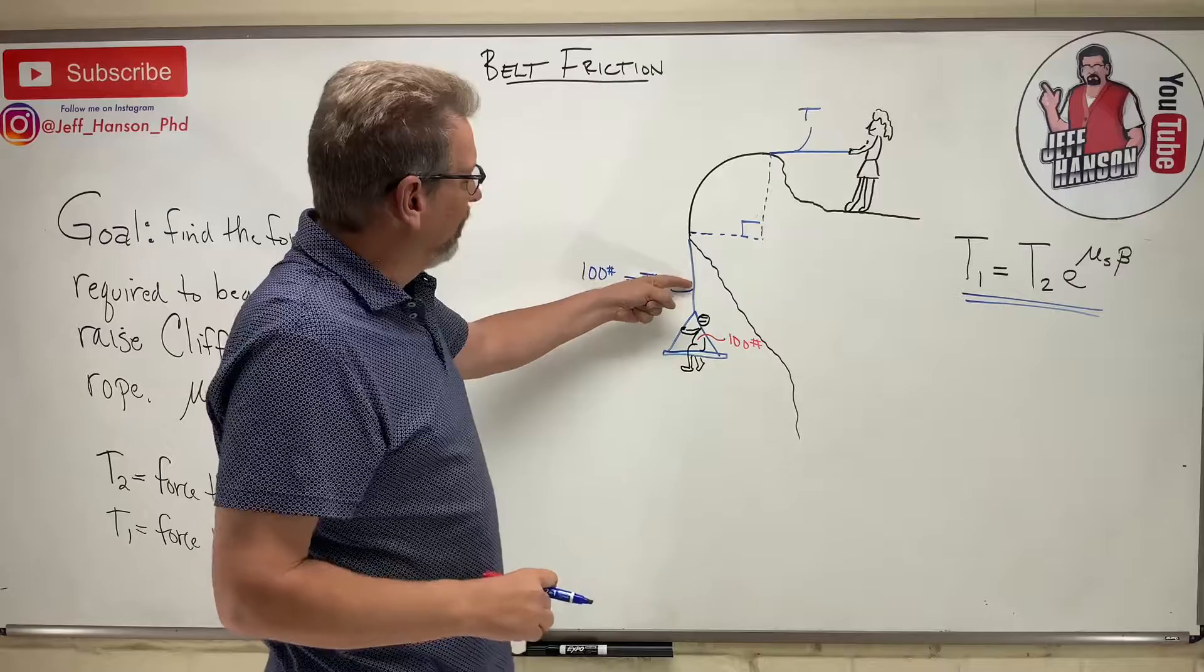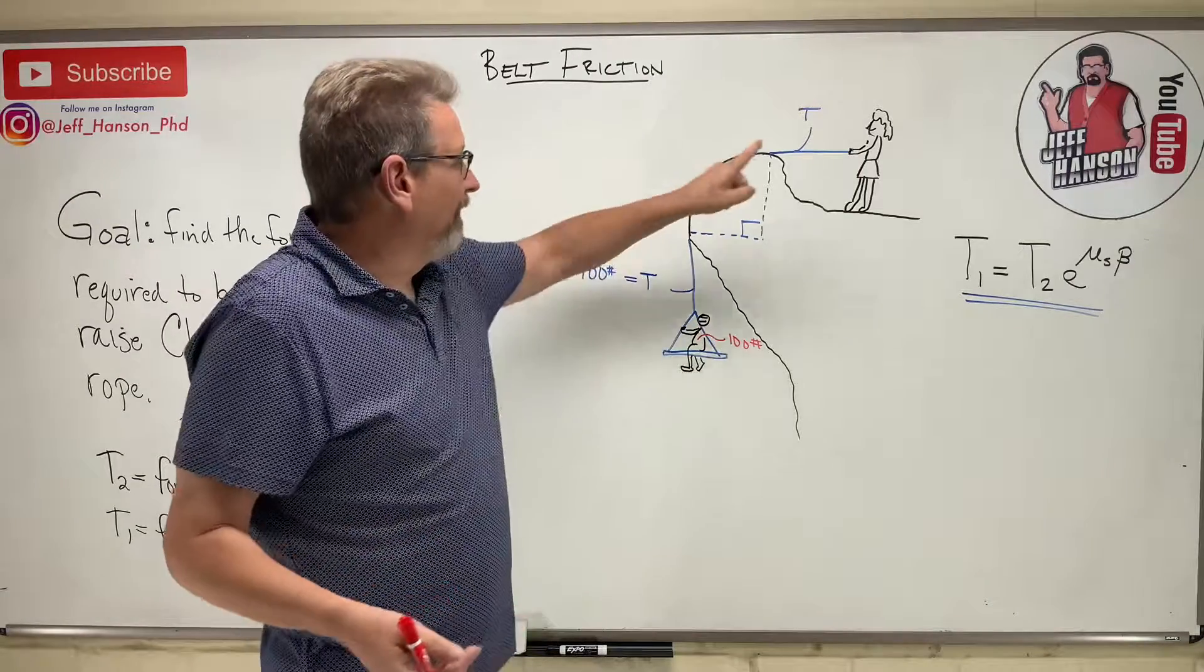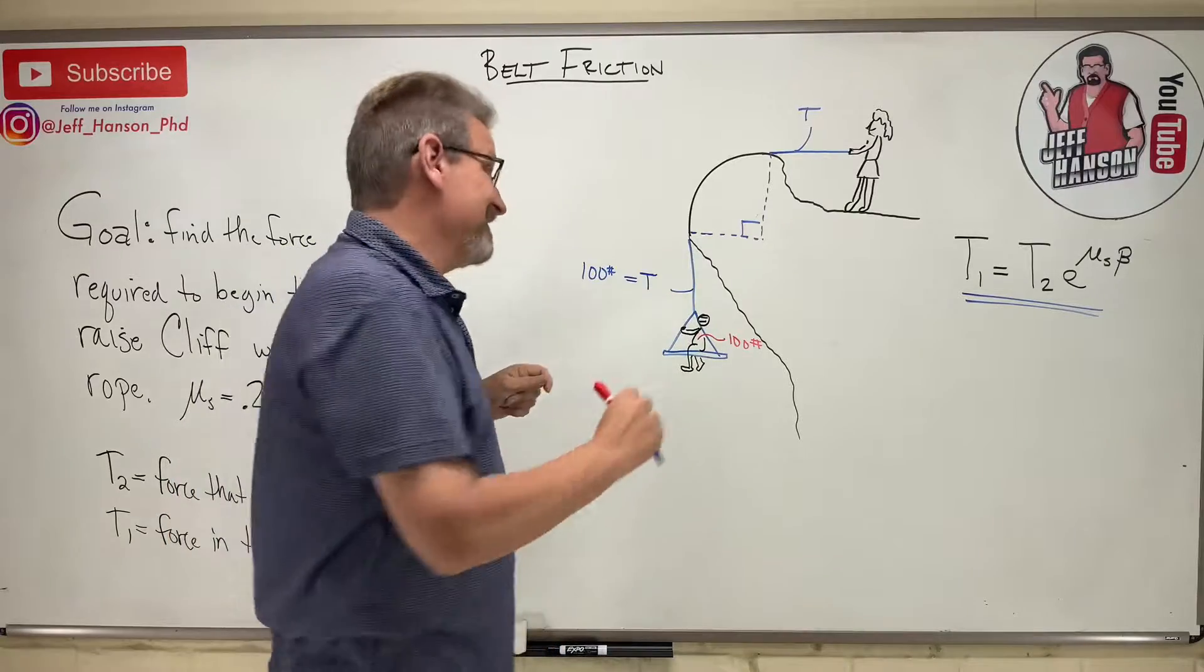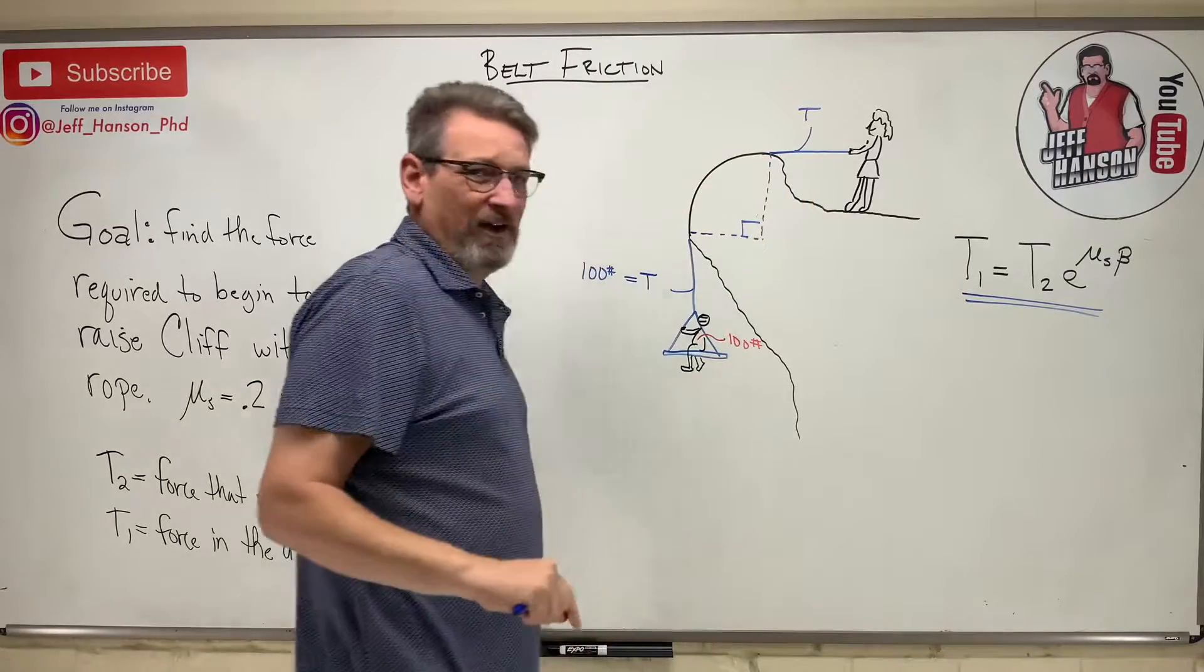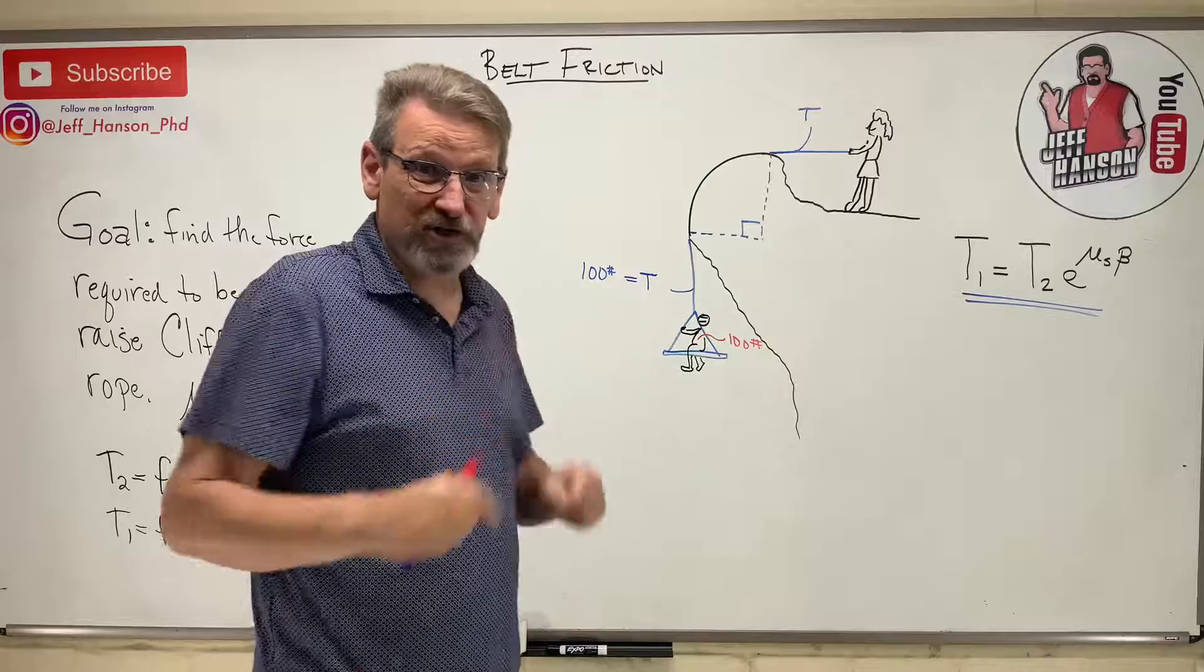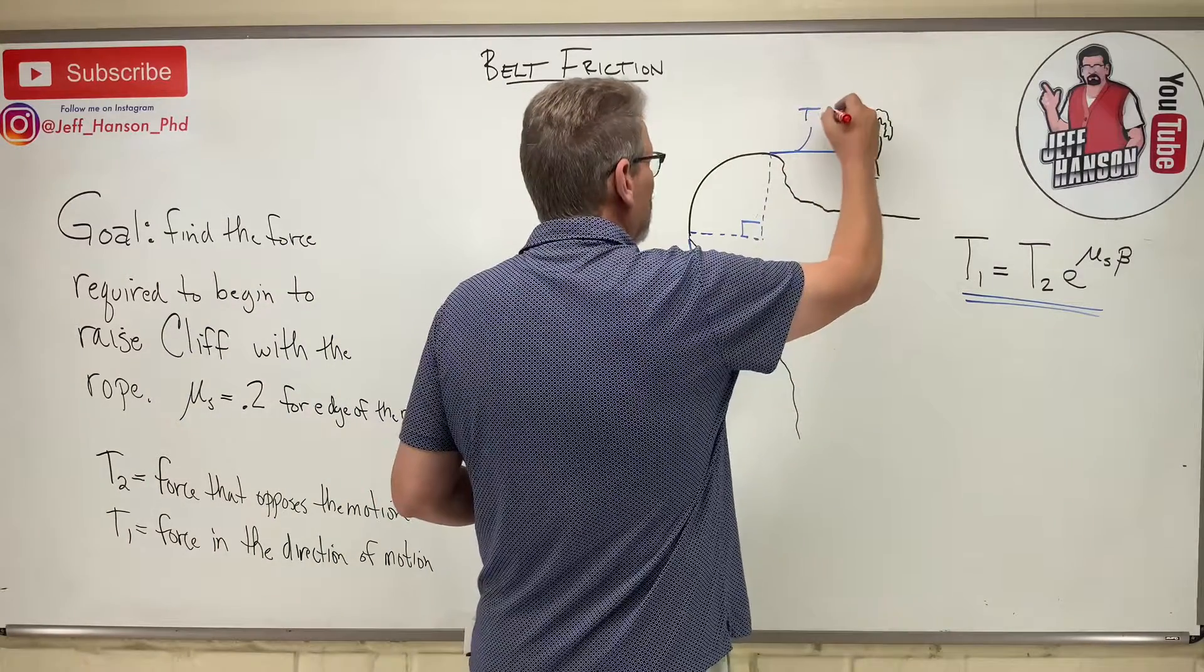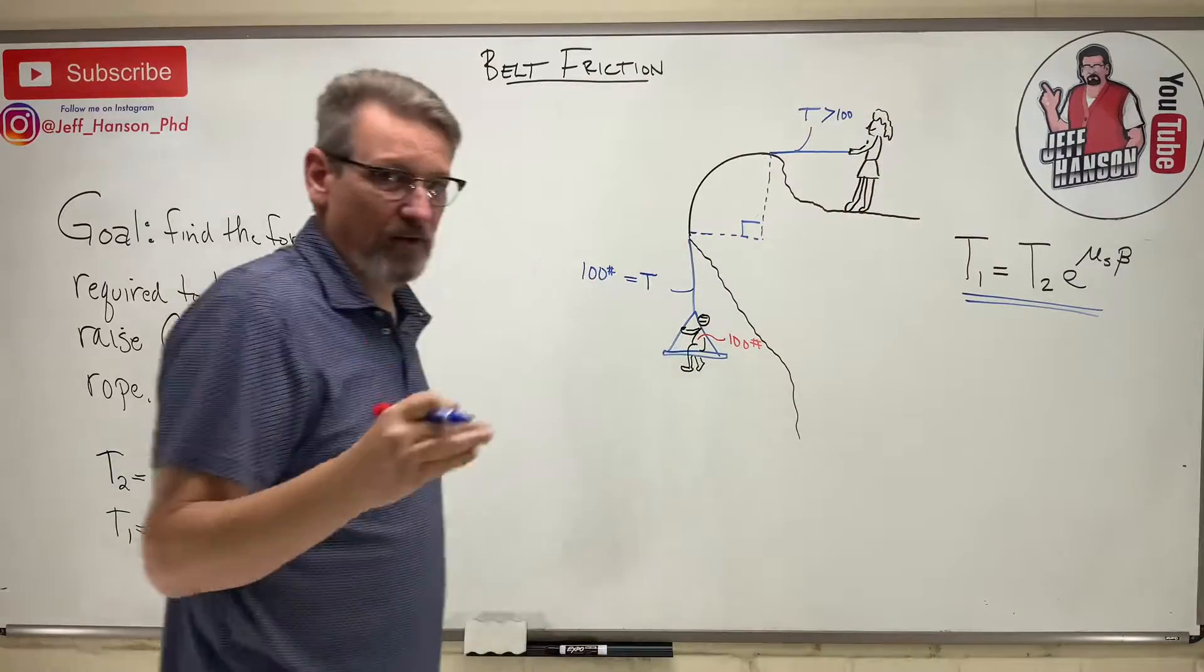I know the tension in the rope here, it's going to be 100, isn't it? It's got to be, because if I look at a free body diagram of that rope I got 100 going down so the rope has to be 100 going up. But what about that rope over there? Well it's going to be 100 plus the amount of friction where it's dragging over the rock there. So it's going to be 100 plus the amount that friction is contributing to the tension in the rope. This one's going to be greater than 100.